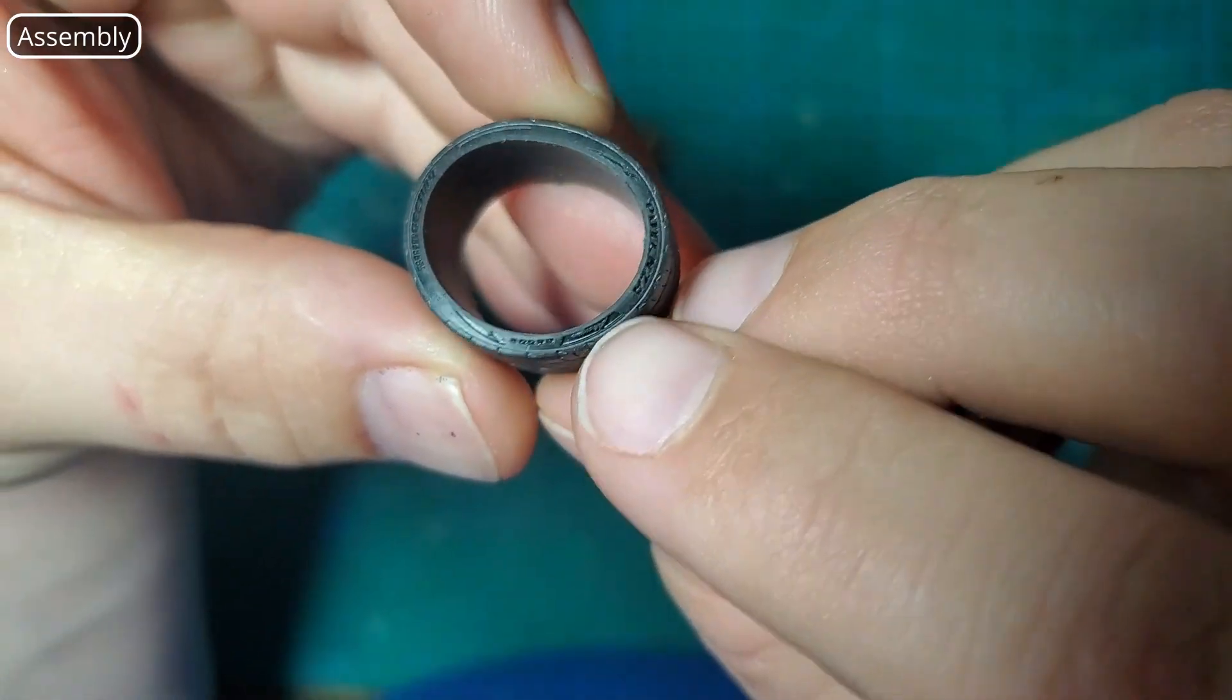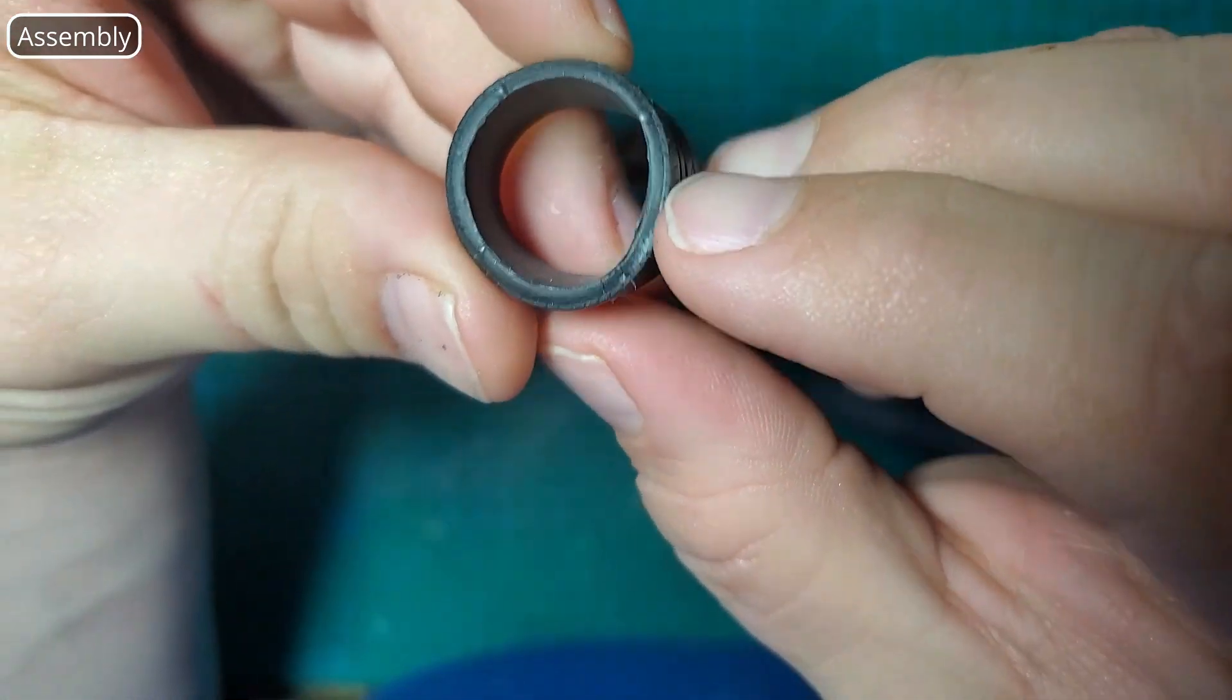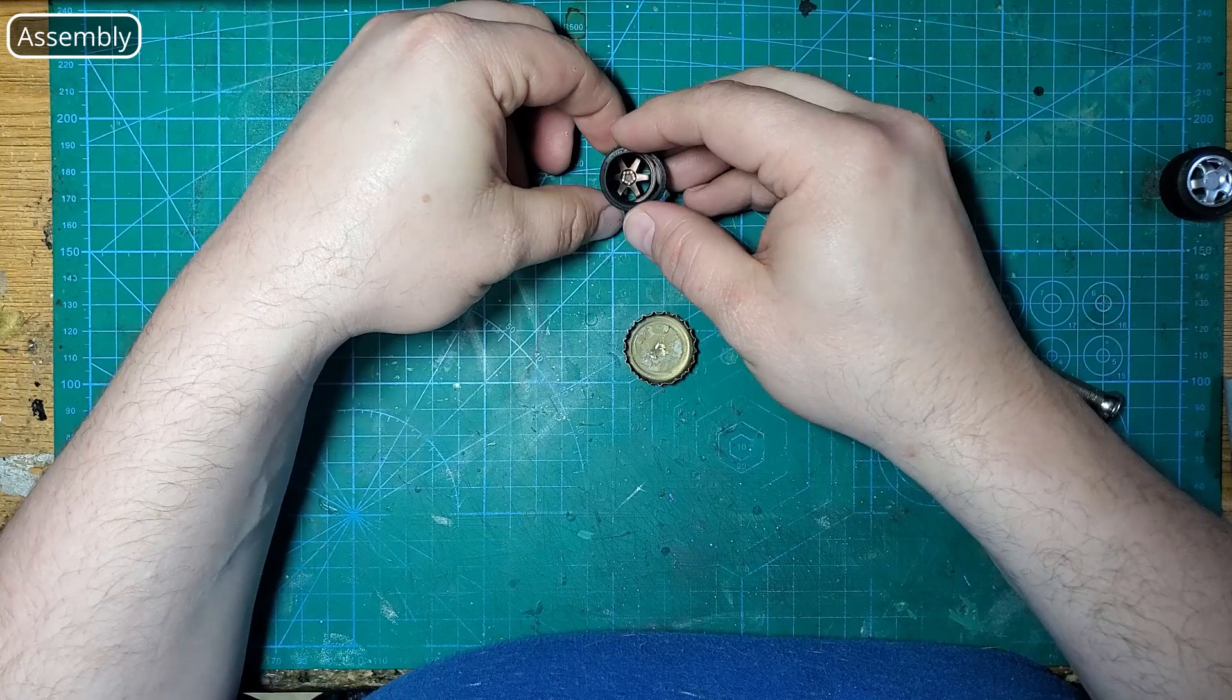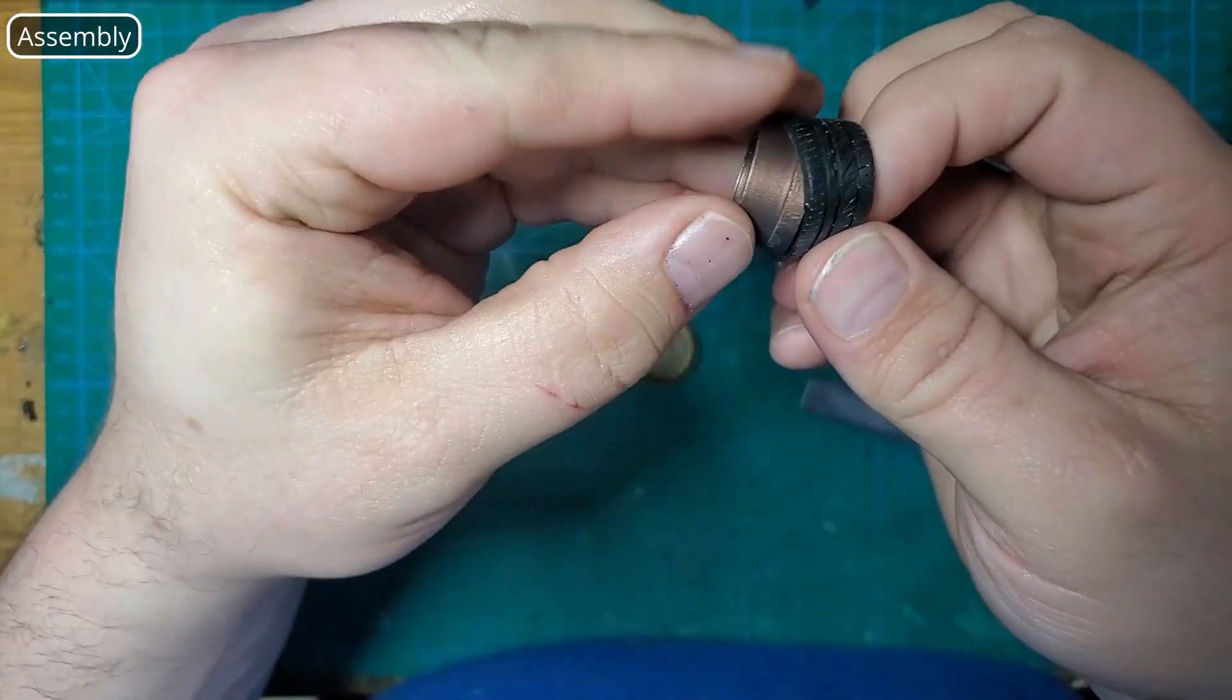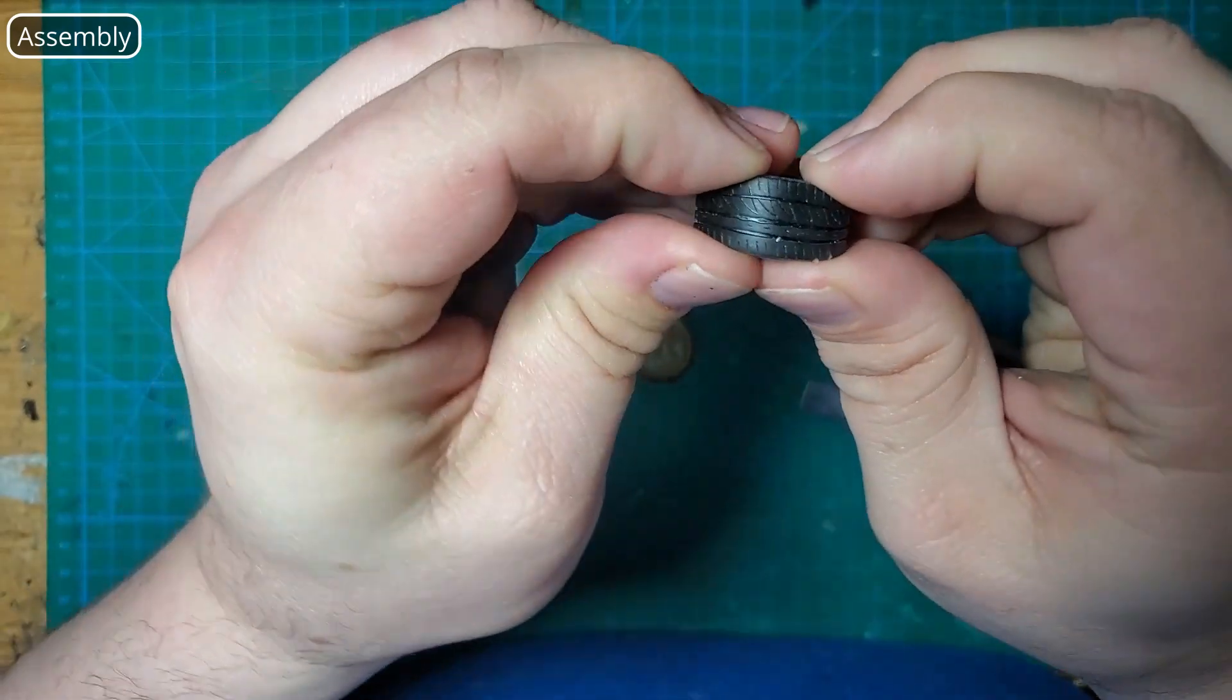Next we're going to mount the tires. These Fugu tires are branded on one side not the other so we need to make sure the correct side is facing out. Then we're just going to slide them in place. They are a snug fit so I'm not even going to bother with glue.